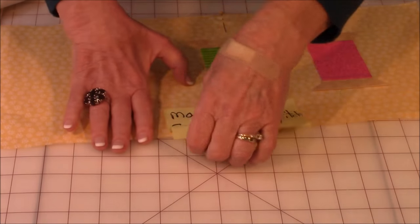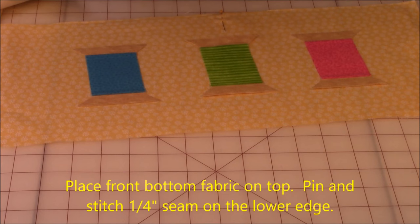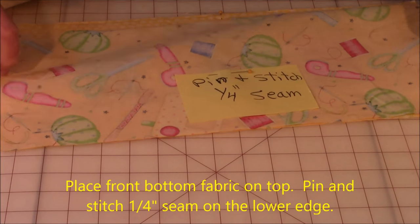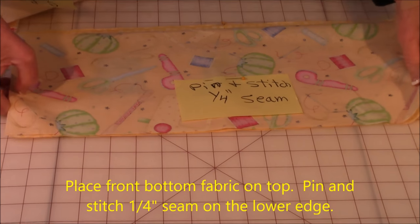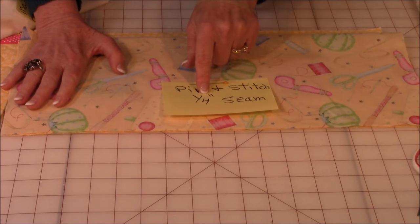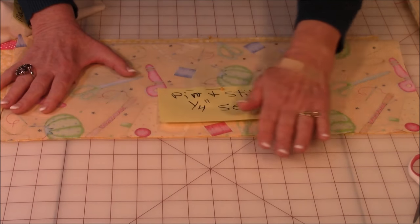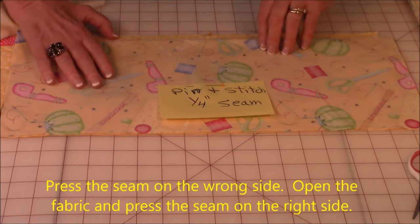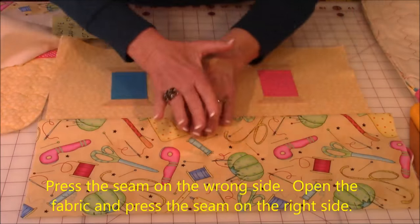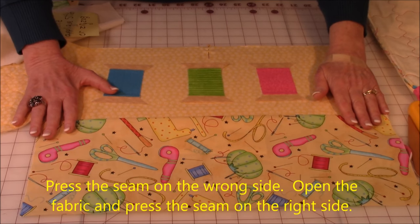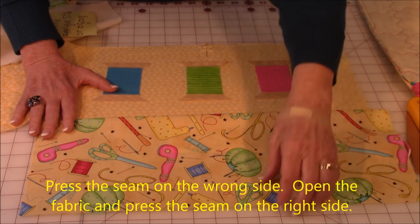Now take your fabric for the bottom of the front. Line it up on that edge there. Pin and stitch one quarter inch all the way across. Then press it with your iron. Open it up and press it again on the right side with your iron.